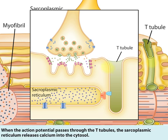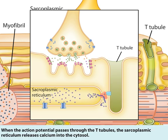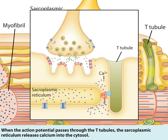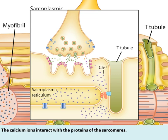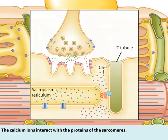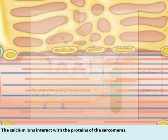When the action potential passes through the T-tubules, the sarcoplasmic reticulum releases calcium into the cytosol. The calcium ions then interact with the proteins of the sarcomeres.